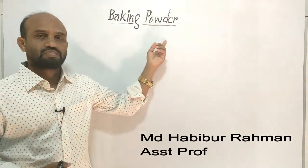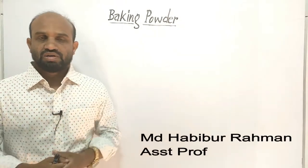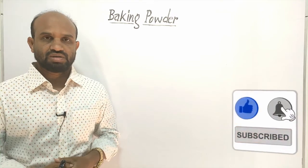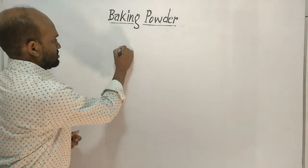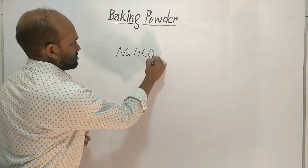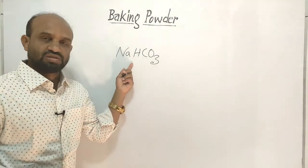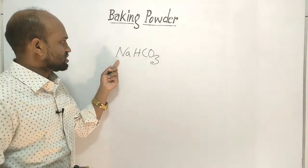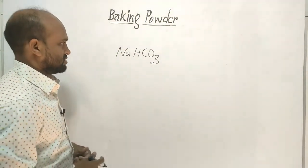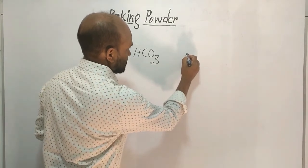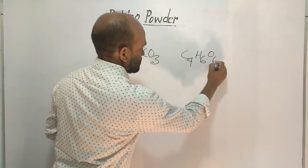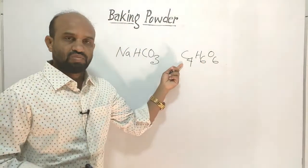Today's lesson is baking powder. First, let's see the molecular formula of baking soda and tartaric acid. Sodium hydrogen carbonate is baking soda, also known as sodium bicarbonate. And this is tartaric acid: C₄H₆O₆. This is the molecular formula of tartaric acid.